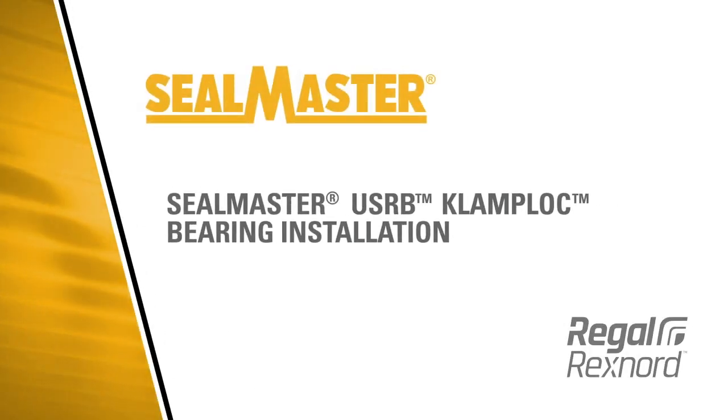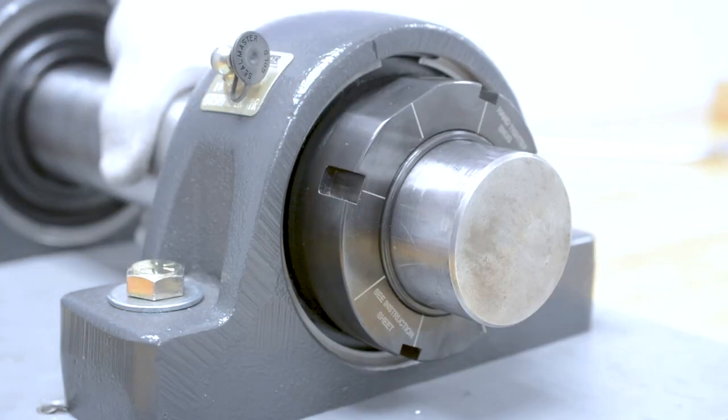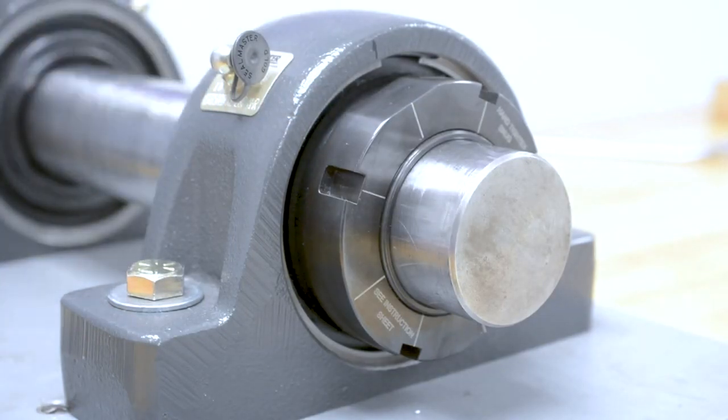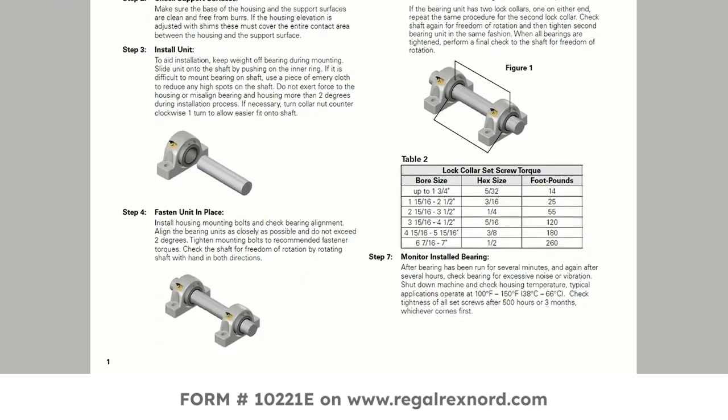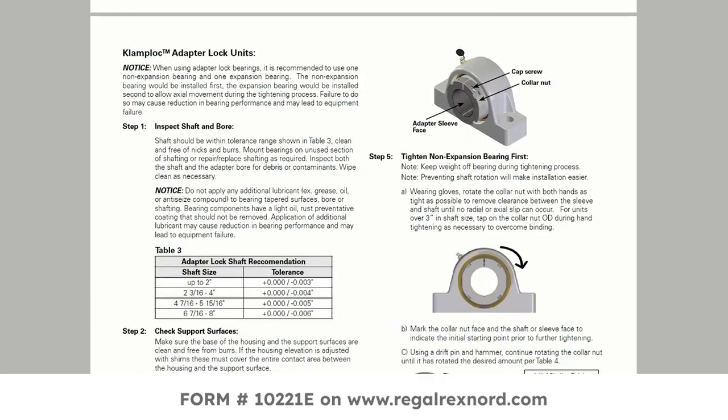In this video, we will review proper installation of a USRB clamp lock adapter lock bearing. Before attempting installation, be sure to read installation form 10-2-2-1-E.